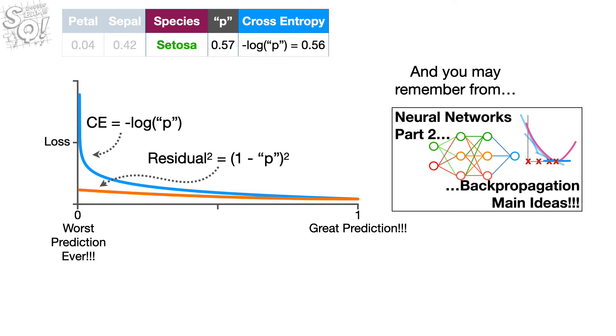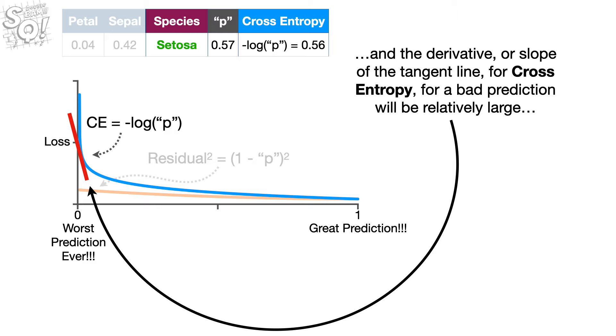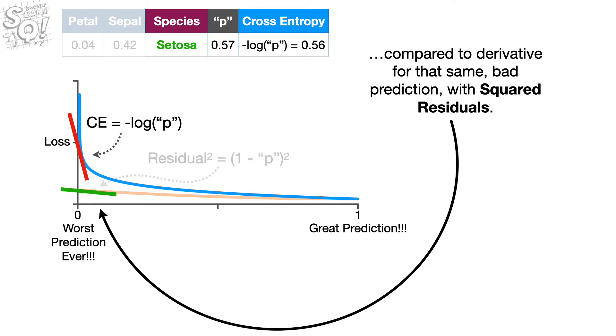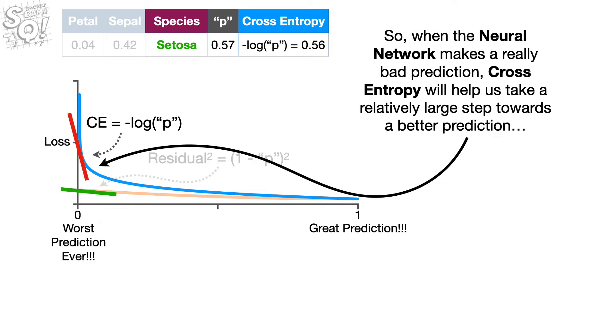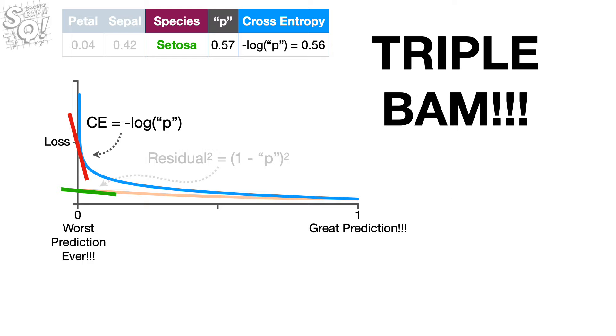And you may remember from Neural Networks Part 2 Backpropagation Main Ideas that the step size for backpropagation depends, in part, on the derivatives of these functions. And the derivative, or slope, of the tangent line for cross-entropy for a bad prediction will be relatively large compared to the derivative for the same bad prediction with squared residuals. So, when the neural network makes a really bad prediction, cross-entropy will help us take a relatively large step towards a better prediction because the slope of the tangent line will be relatively large. Triple Bam!